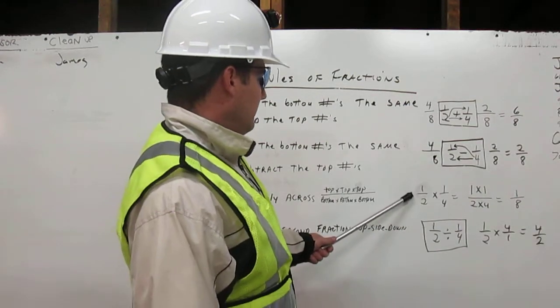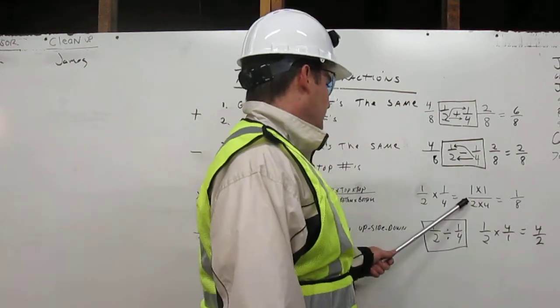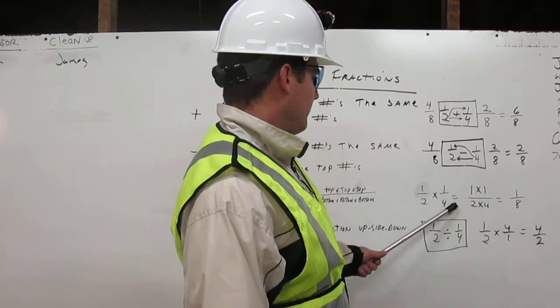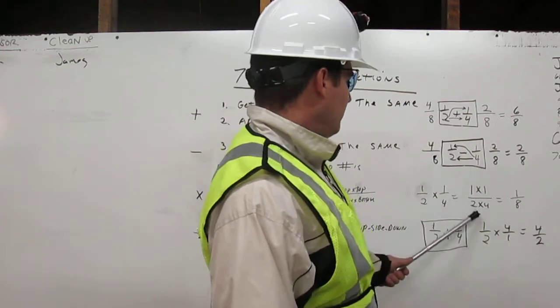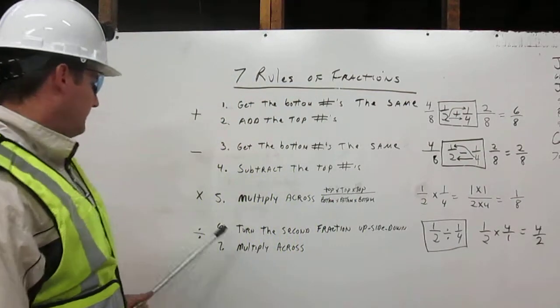In this example right here, one-half times one-fourth. We put it over here, and it is basically one times one over two times four. One times one is one, two times four is eight. The answer is one-eighth. That's how you multiply fractions.